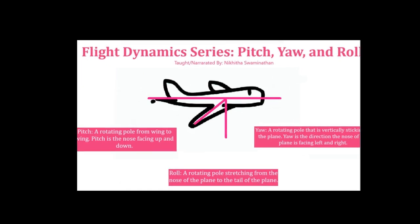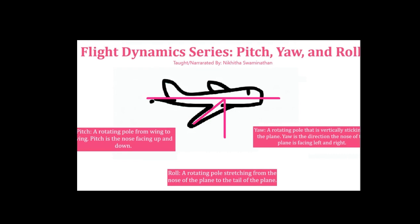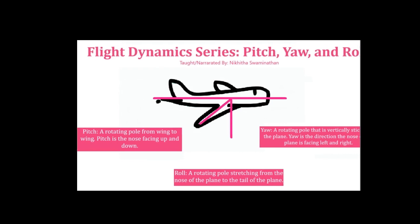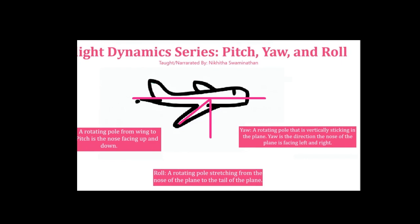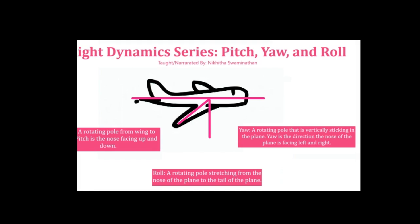Let's do a little summary. Pitch is the nose facing up and down. Roll is the whole plane being able to turn left and right. And yaw is the direction the nose of the plane is facing left and right. Thank you for watching and that will be it for today.